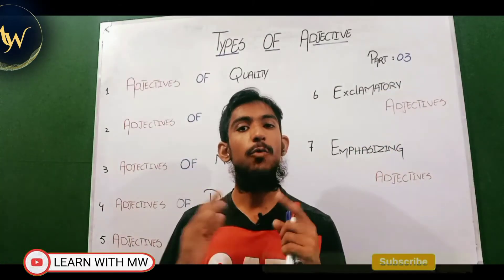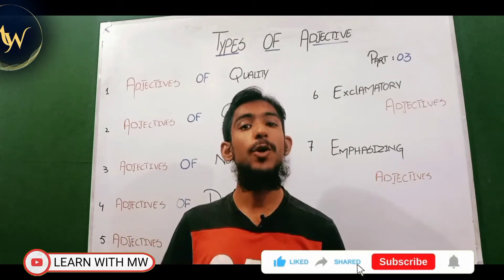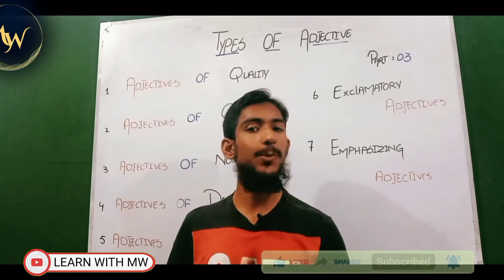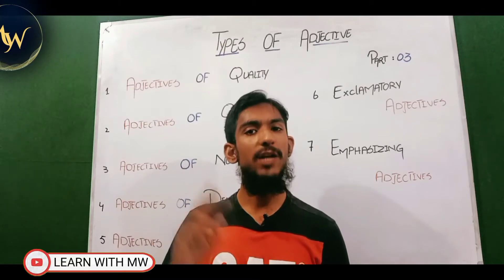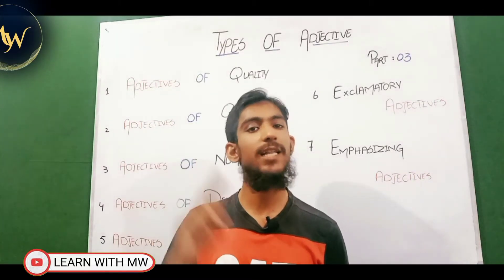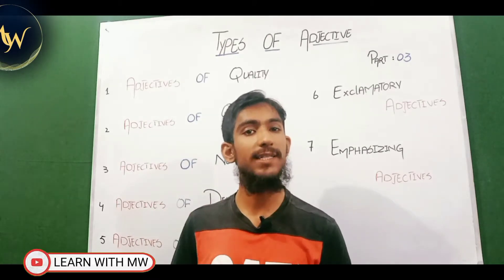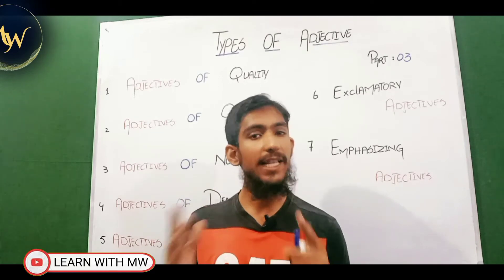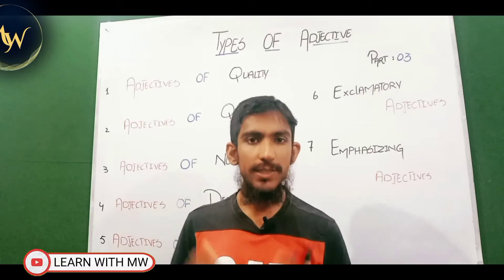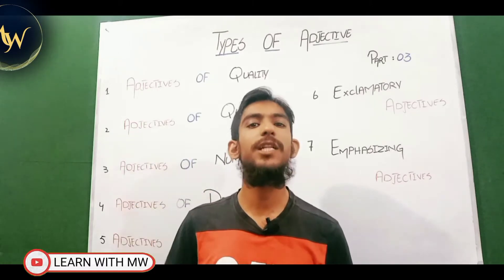In order to start Part 3, I want to give you a short recall. In Part 1 we discussed the introduction to adjectives — what adjectives are in English grammar — and also the position of adjectives. We discussed two positions: predicate position and attribute position. Then in Part 2 we discussed a very important concept: why the article is an adjective in English grammar. If you missed Parts 1 and 2, go to the channel and watch those videos.